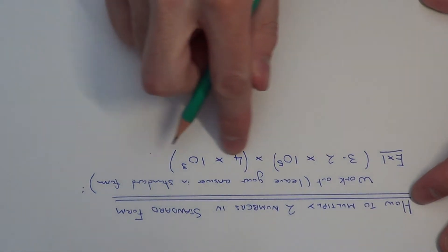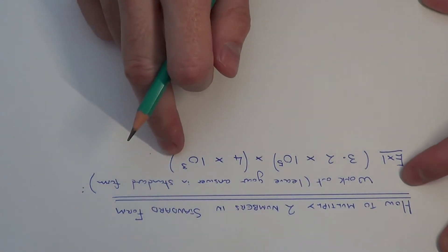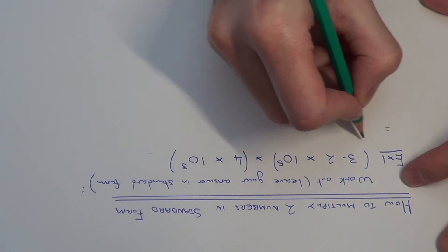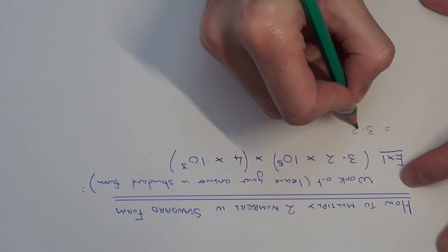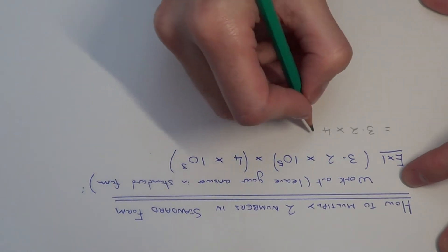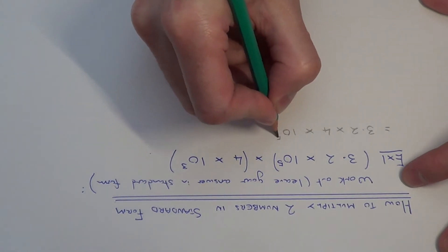So I'm just going to first of all change the order around here because when you multiply it doesn't matter which order you do it in. And I'm just going to write it down as, if you put the numbers first, 3.2 times 4 and then write down the power bits afterwards.